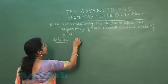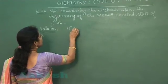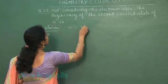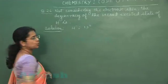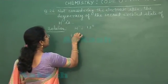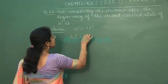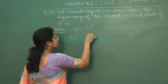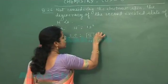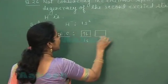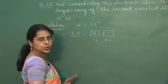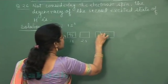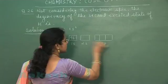H⁻ is a multi-electron species having electronic configuration 1s². If represented by an orbital diagram, the 1s orbital contains 2 electrons. The next higher energy state is the 2s state, and after that is the 2p state.